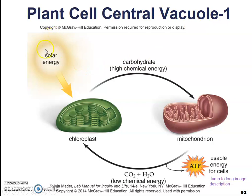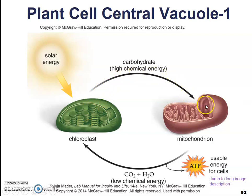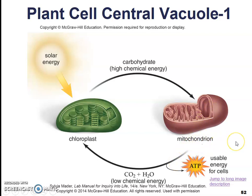So here we have a diagram. Solar energy is taken in by the chloroplast — this guy right here — and they convert it along with carbon dioxide and water into a carbohydrate, glucose, which is then shipped to the mitochondria. The mitochondria breaks that sugar down into usable energy in the form of ATP, or adenosine triphosphate, that energy molecule that we learned about last chapter.